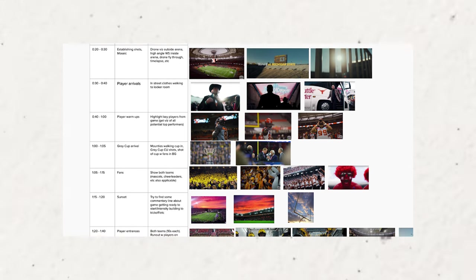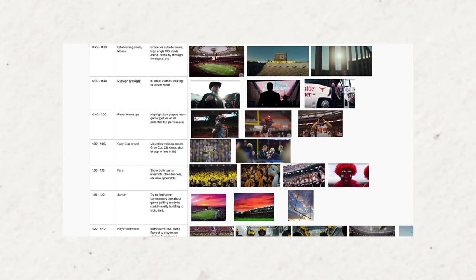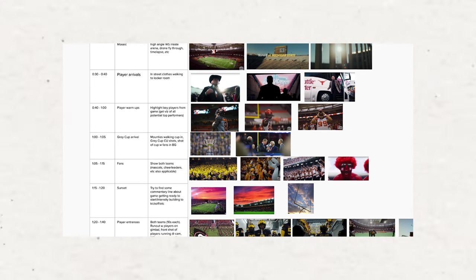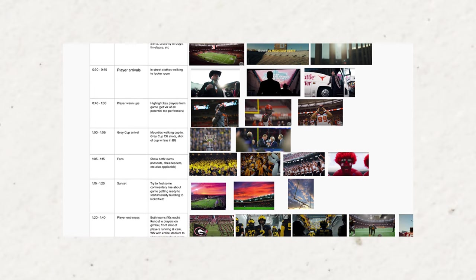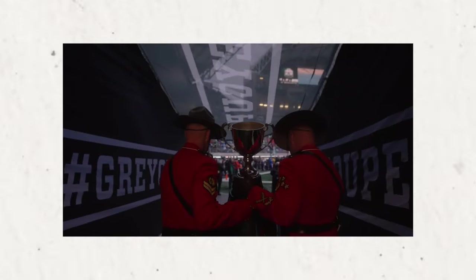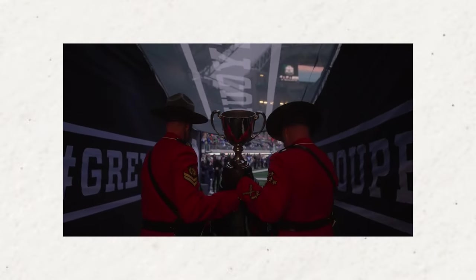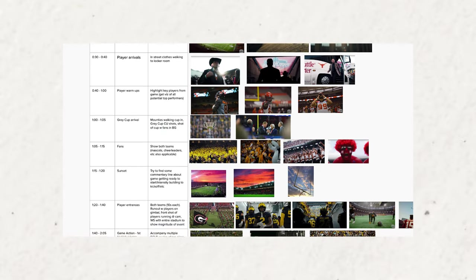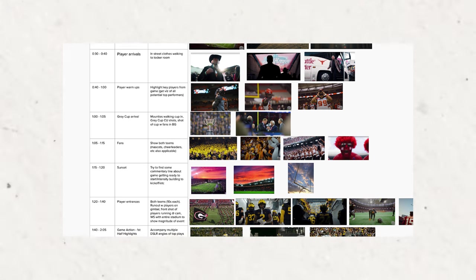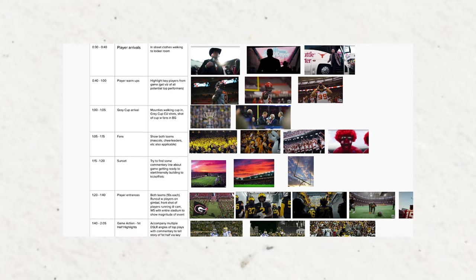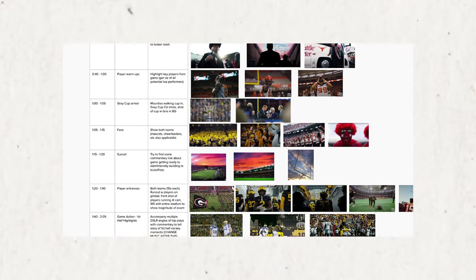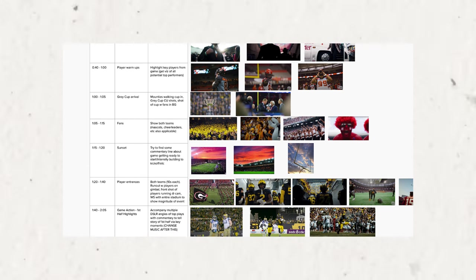Then we got player warmups, the arrival of the Grey Cup trophy, which is a pretty important part of a championship game. The trophy gets walked out by Mounties and there's like a whole show around it — planes fly over, it's a big deal. So I wanted to make sure that we captured that appropriately, getting some fan shots, the sunset for the game since it's a night game, and then just typical game stuff.